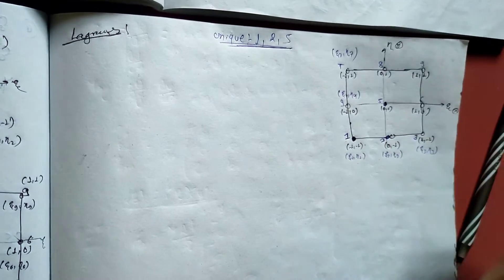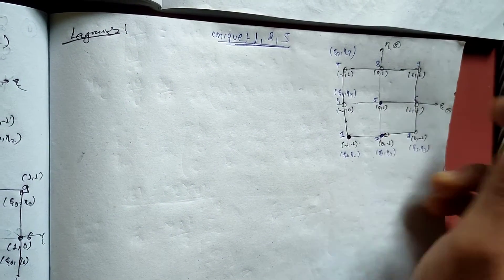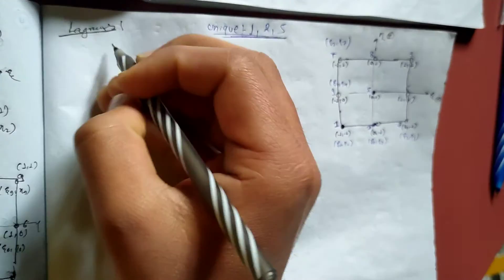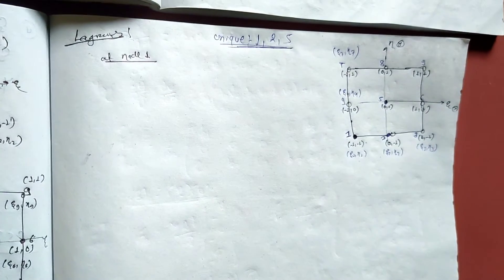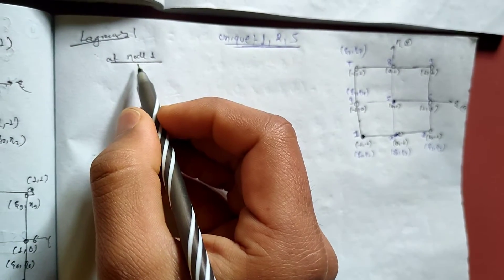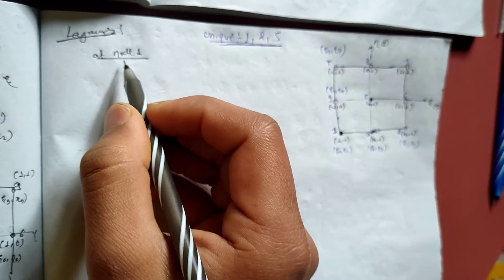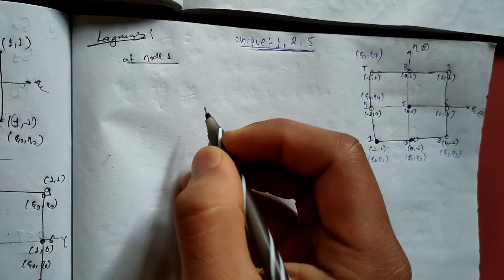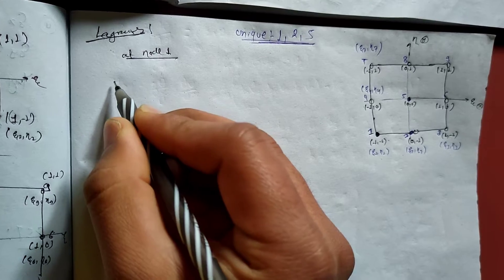We have to work the same thing for each node. For node 5, we have to find the shape function similarly. Now we will see the total values here — this will be the same thing that we will do as a whole.